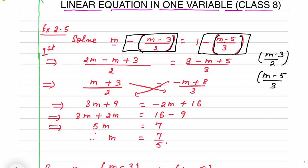There are so many methods; you can solve by any method. Here I am solving LHS separately and RHS separately. The LCM of 1 and 2 is 2 — since m by 1 has a denominator of 1, the LCM is 2. So 2 goes into 2 once; multiplying m gives 2m. The minus sign is already there.